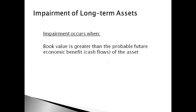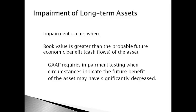All long-term assets must be tested periodically for impairment. Impairment occurs when book value is greater than the probable future economic benefit, or cash flows, of the asset. Book value is the net cost reported on the balance sheet. GAAP requires impairment testing only when there are circumstances that indicate the future benefit of the asset may have significantly decreased, particularly for property, plant, and equipment.